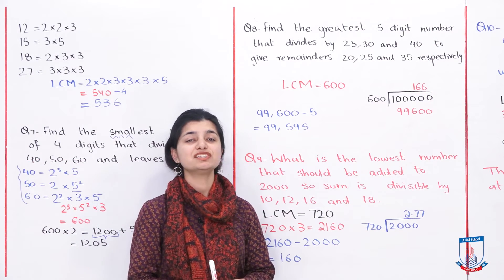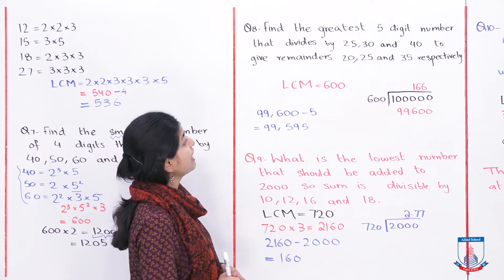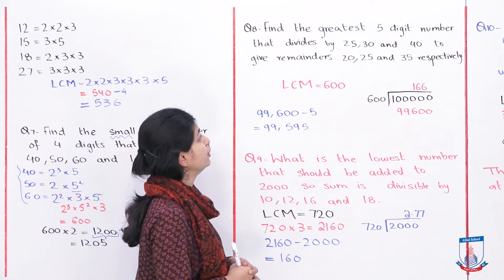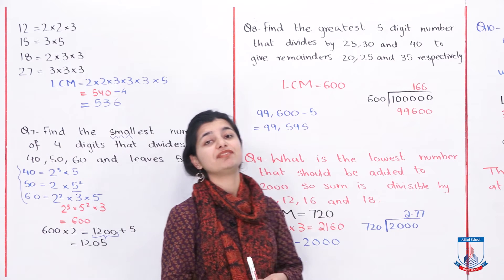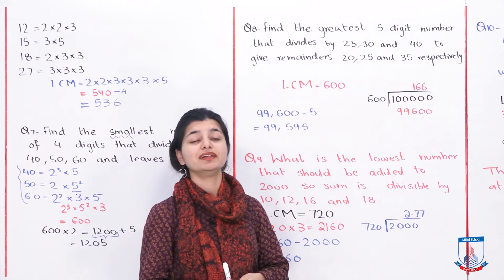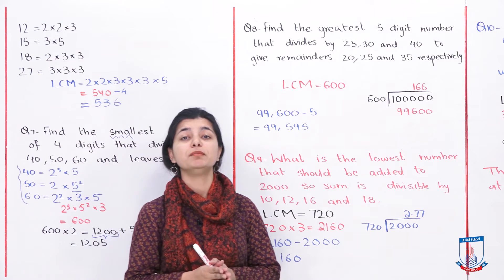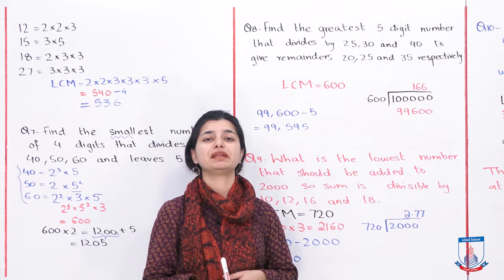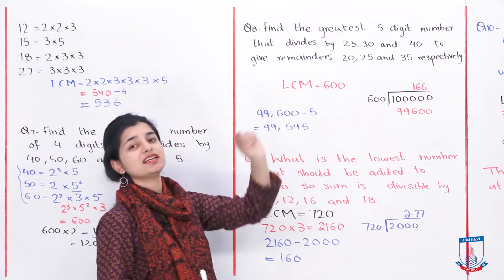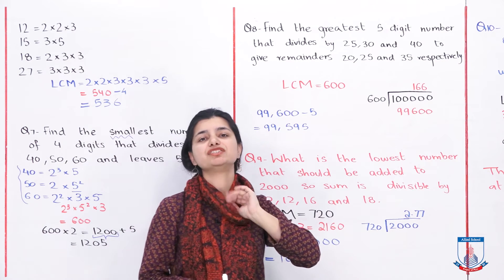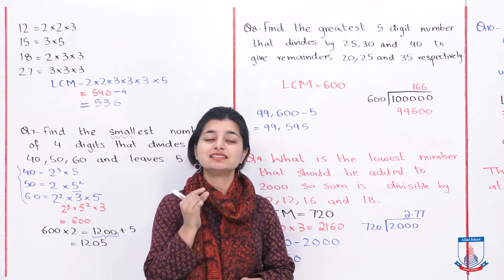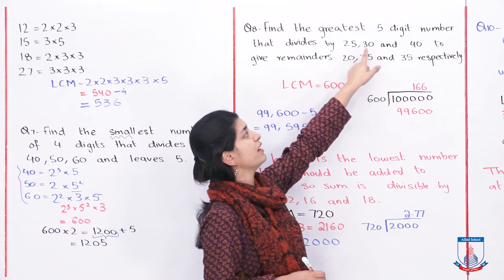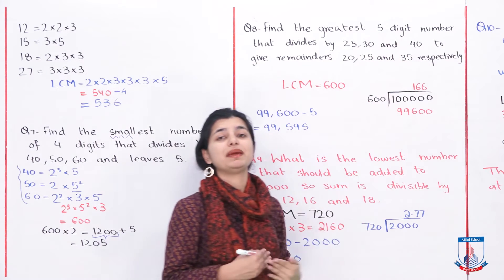Question number 8: Find the greatest 5-digit number that, when divided by 25, 30, and 40, gives remainders 20, 25, and 35 respectively. Here we have to find a common multiple again because the number is divisible by these three numbers. But they used the term 'greatest', so we need the greatest 5-digit multiple. As usual, we will first find the LCM of 25, 30, and 40.